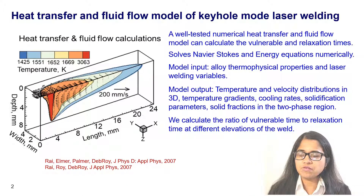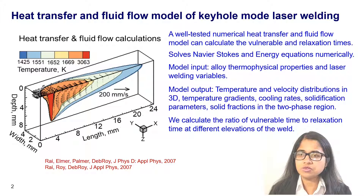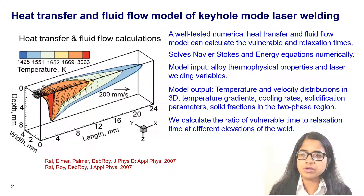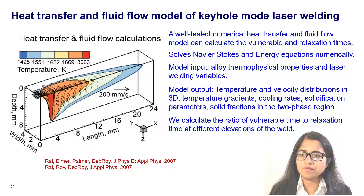To calculate the vulnerable and relaxation times, we need the 3D temperature fields. For this, we use a well-tested heat transfer and fluid flow model of laser keyhole welding. The model numerically solves the Navier-Stokes and energy equations, and requires alloy thermophysical properties and laser welding variables as input. The model outputs include 3D temperature, velocity distribution, temperature gradient, cooling rate, solidification morphology, and solid fractions. Here in this figure, a molten pool with keyhole is shown after the heat transfer and fluid flow calculation.